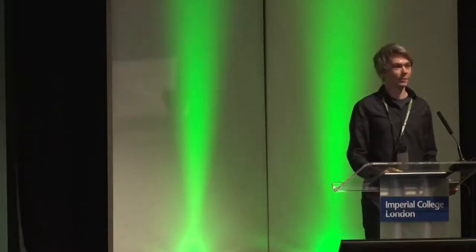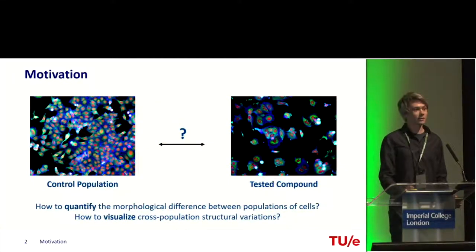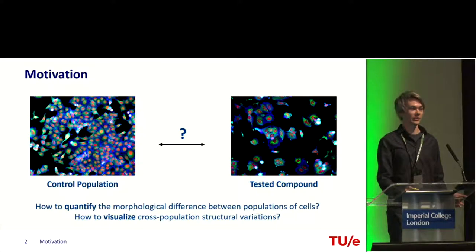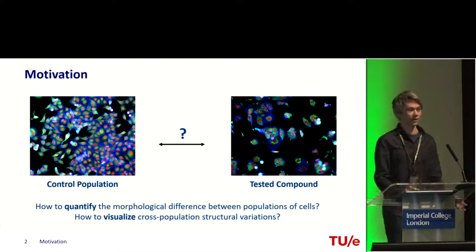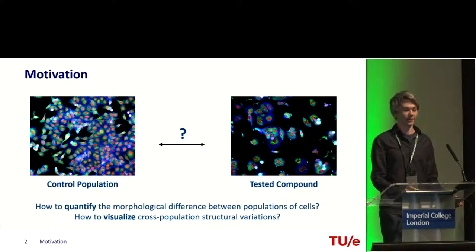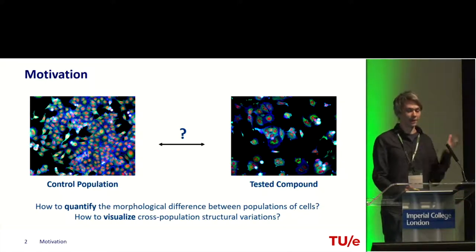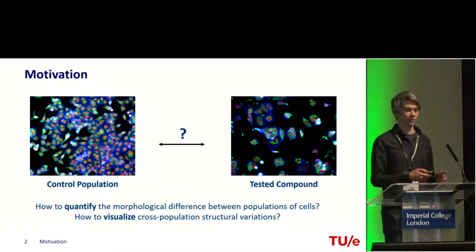Hello, everyone. I'm Maxim Lafarge from TU Eindhoven. Microscopy imaging can reveal a lot of information about the state of cells. Biologists acquire such images to solve some biomedicine problems. They acquire such images and analyze how different populations of cells that are treated under different chemical conditions or that express different genetic expression.